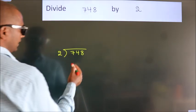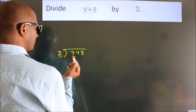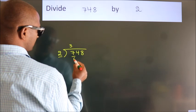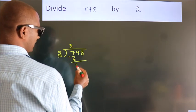Next, here we have 7, here 2. A number close to 7 in 2 table is 2 times 3 is 6. Now we should subtract, we get 1.